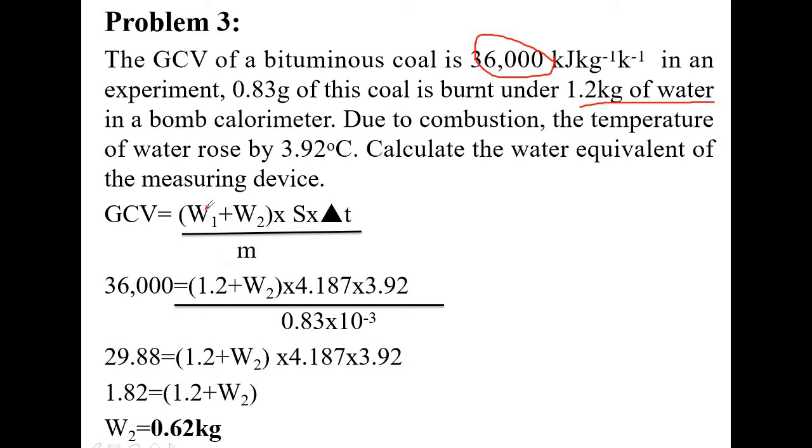W2 is the water equivalent of the calorimeter but we have to find out what is the water equivalent, we do not know, therefore it is a question mark. Specific heat of water is not given, we should know it by heart, 4.187. Temperature of water rose by 3.92 degrees Celsius, this is delta T, 3.92 directly. 0.83 gram of the coal sample is the fuel taken for determination of CV. 0.83 to be multiplied by 10 to the power minus 3 because it is to be expressed in kg.